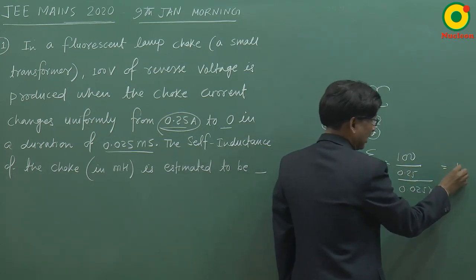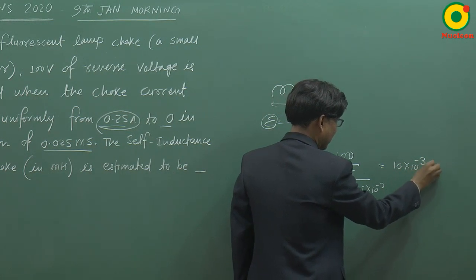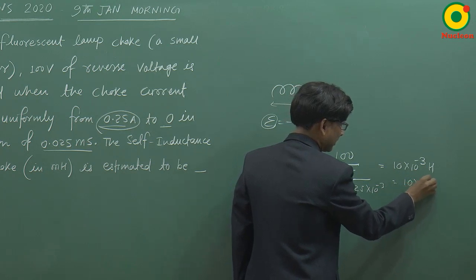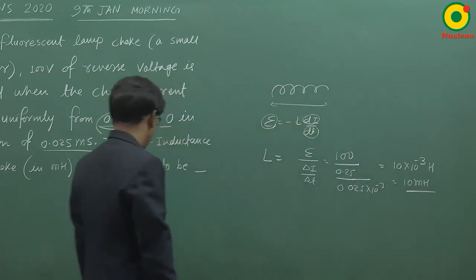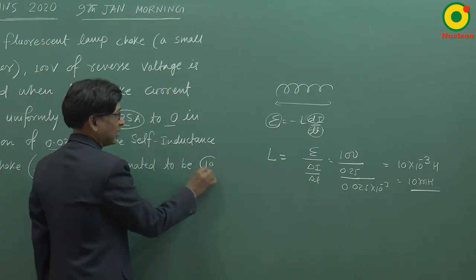इसको solve करेंगे, तो यह आएगा 10 into 10 to the power minus 3 henry, जिसको हम 10 millihenry लिख सकते हैं। तो यहां पर जो answer है, millihenry में ही देना है, तो answer इसका आएगा 10.